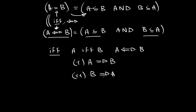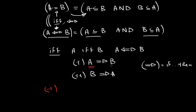In your proof, you first have to show that A implies B, and then B implies A. A one-sided arrow is the same as if-then. So for the first portion: you assume A and prove B. For the second portion: you assume B and prove A.